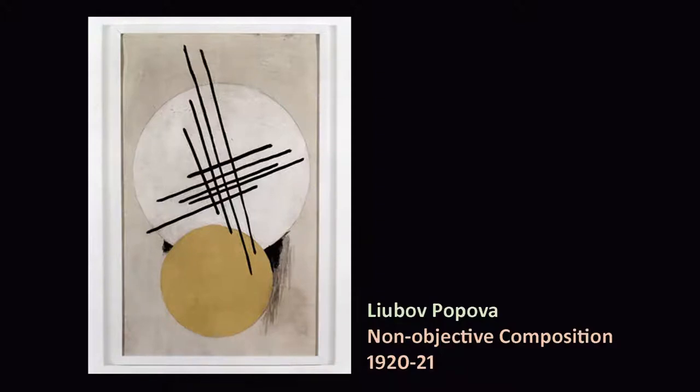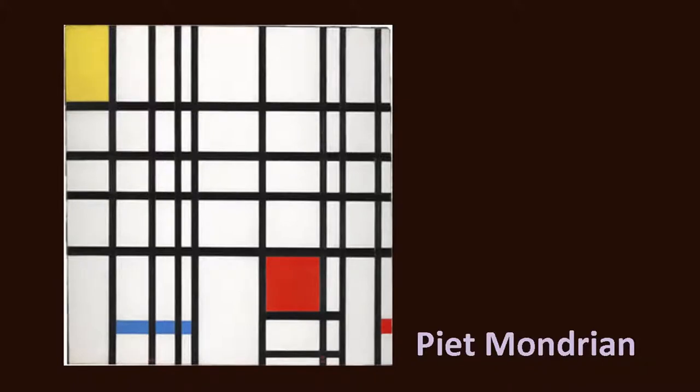There was also Lyubov Popova, another Russian artist who worked simultaneously at the same time as Malevich and was also part of the Constructivist movement. She was also coming up with paintings that straight away worked with geometric entities, shapes, and forms, paving the path for a long engagement with abstract art for artists to follow.